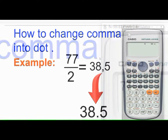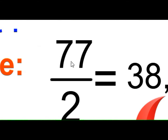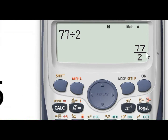First of all, let me show you an example. Let's divide the number 77 by the number 2 on this calculator. Press 77, divide by 2, and press the equals button to get the result. Here we can see that the result is in fractional form. Let's convert it into decimal format.